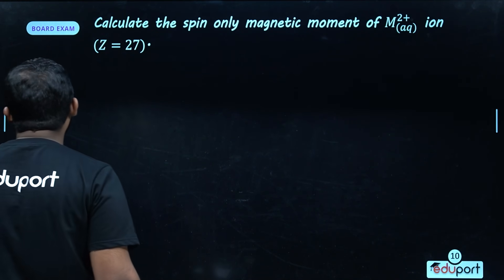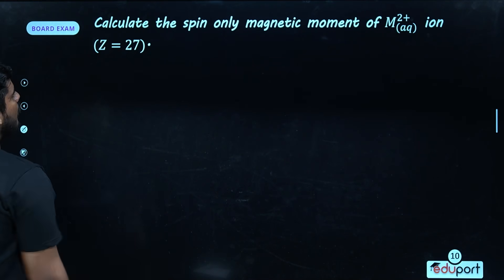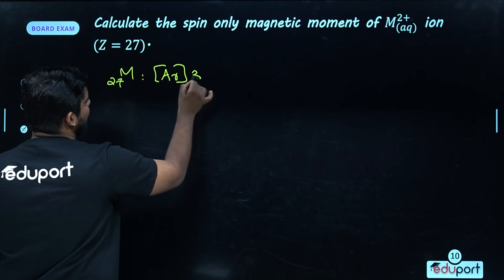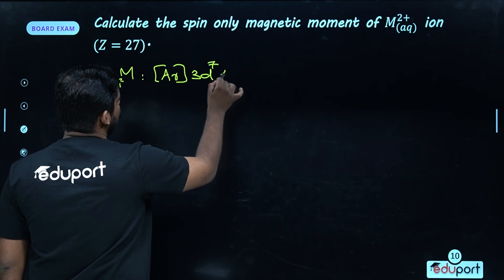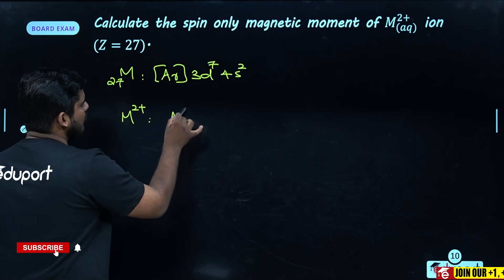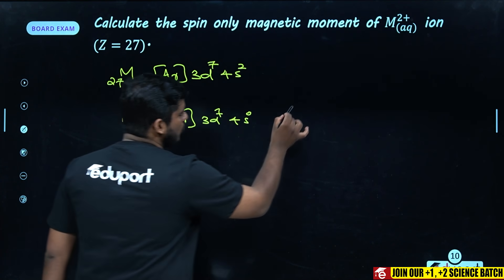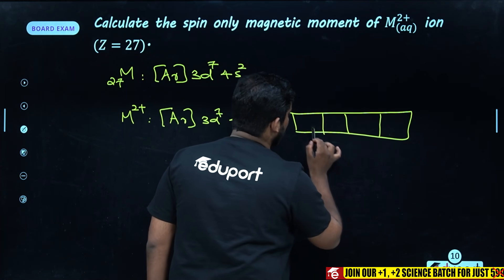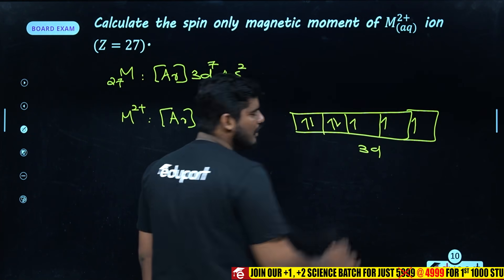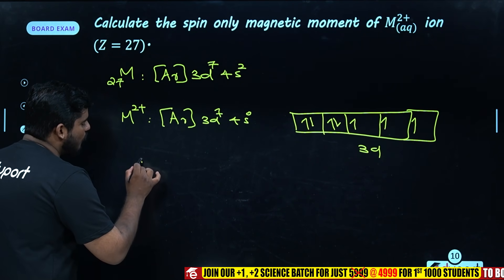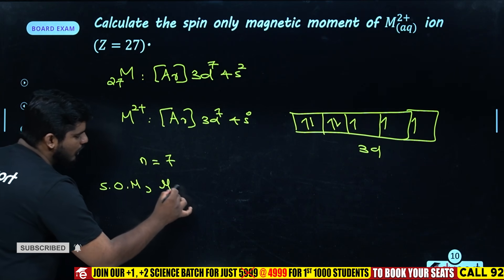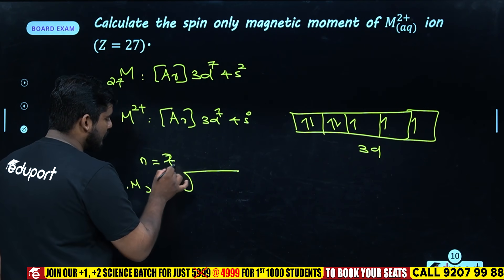Calculate the spin-only magnetic moment of M2+ ion where Z is equal to 27. M has atomic number 27, so its electronic configuration is [Ar] 3d7 4s2. For M2+ (removing 2 electrons), the configuration becomes [Ar] 3d7. Filling the 3d orbital with 7 electrons gives 3 unpaired electrons.